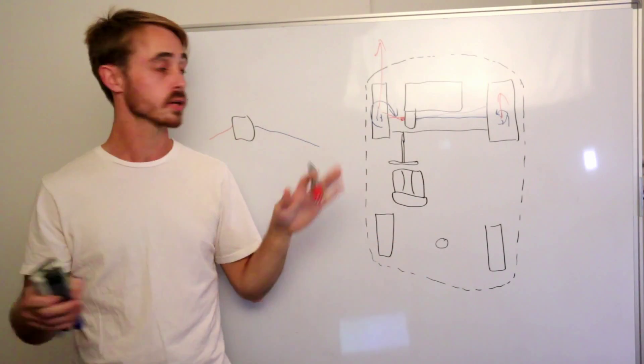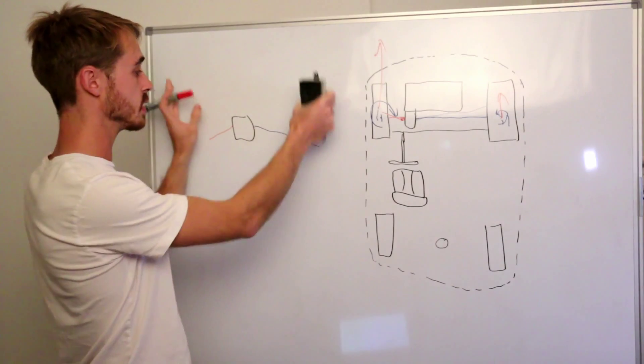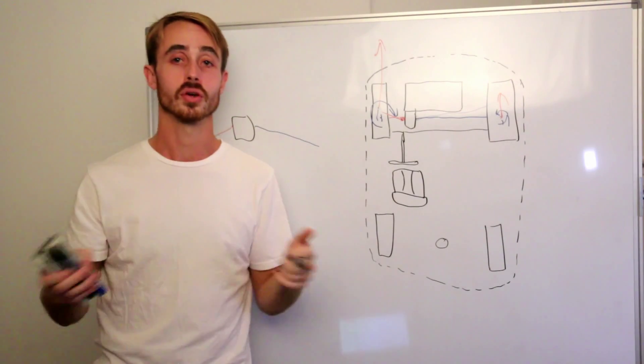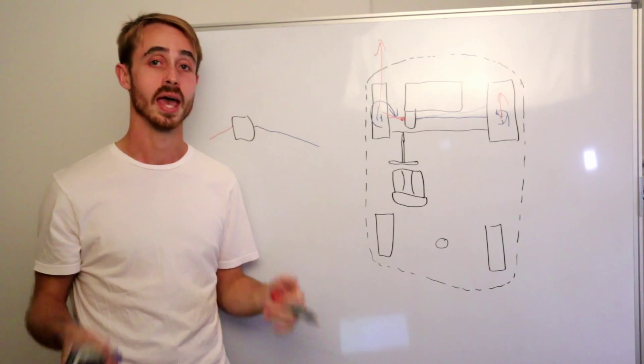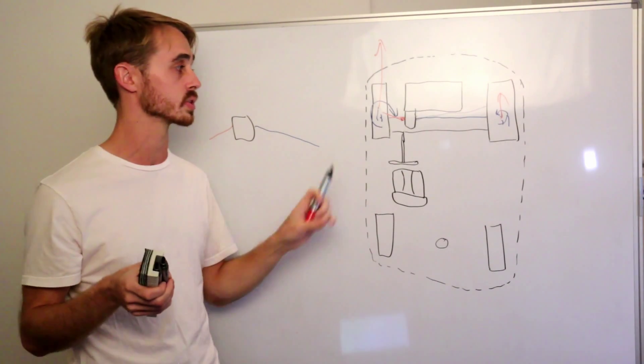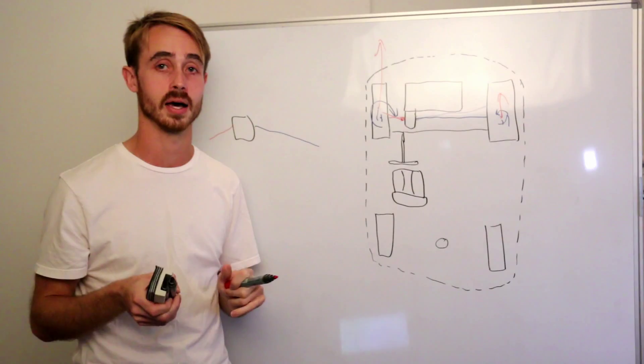So just the dynamics of the vehicle all these angles are constantly changing even in bump these angles are changing. So that is what's going to cause different torque steer scenarios depending on the situation and makes it really hard to avoid torque steer especially in a front wheel drive car.